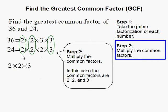So we only multiply the common factors. So 2 times 2 times 3. That gets us 12. And 12 is the greatest common factor. And this completes our problem.